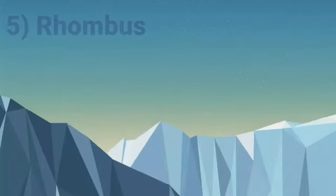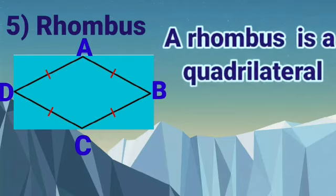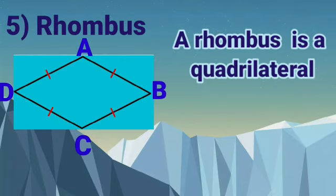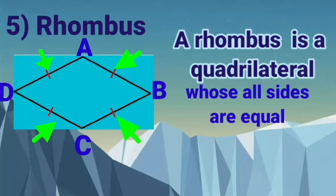Number 5: We have rhombus. A rhombus is a quadrilateral whose all sides are equal. In this figure we can see all sides are equal, so this is a rhombus.